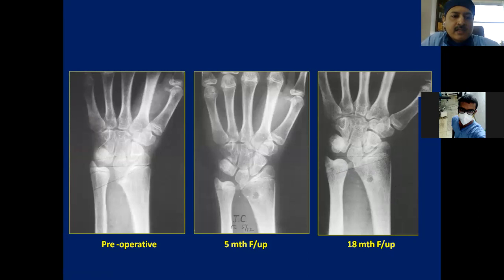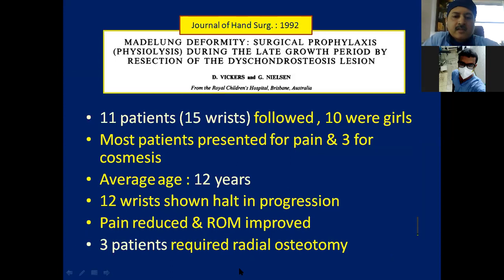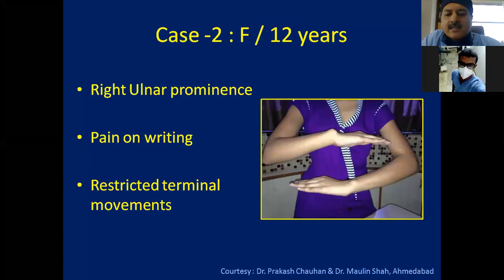A paper published in 1992 by Vickers had 11 patients — 10 were girls. Most presented for pain and three for cosmesis, average age 12 years. Twelve out of 15 wrists showed halt in progression of the disease — deformity did not progress, pain reduced, and range of motion improved. Three patients required radial osteotomy. The question is which patients require radial osteotomy — most children below 12 years who undergo this procedure don't need further intervention.